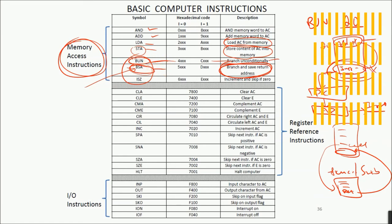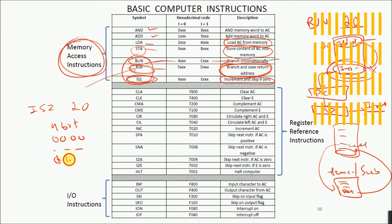The last memory reference instruction is ISZ — increment and skip if zero. For example, ISZ 20 goes to address number 20, increments the data stored there, and checks if it becomes zero after incrementing. Something can become zero after incrementing if it is a negative number or if it overflows — for a four-bit number, going from 1111 incrementing rolls over to 0000. If you want to increment a memory location and skip the next instruction if it becomes zero, use ISZ.